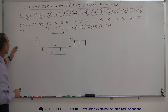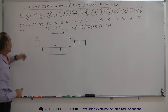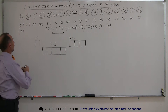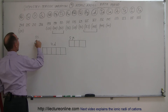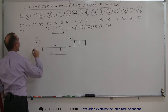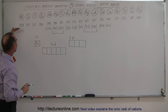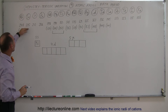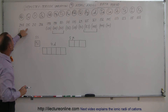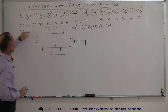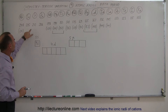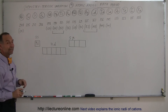Notice that the first two — rubidium and strontium — fill up the 5s orbitals with electrons. Since the screening effect doesn't change, you can see that the size of the radius decreases going from rubidium to strontium.